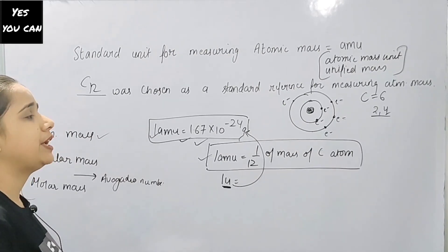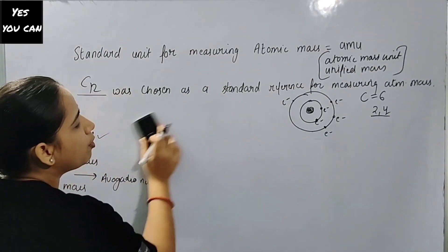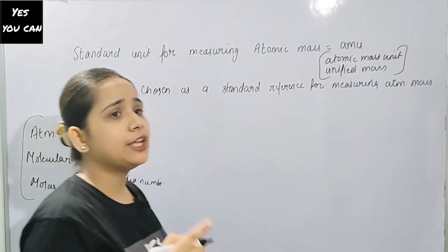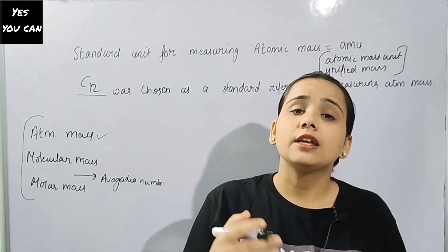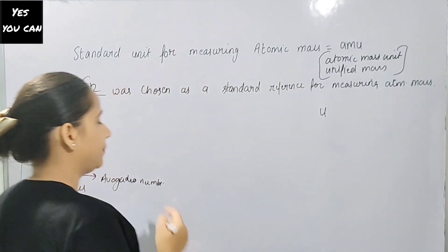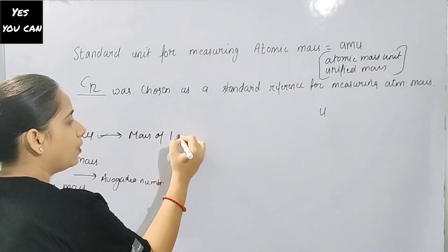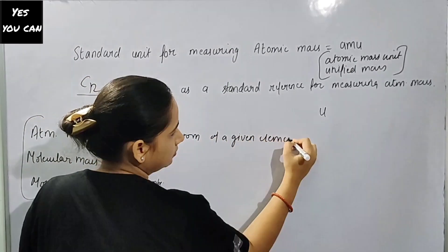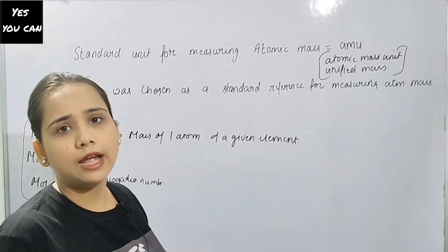So 1 u (unified mass) is equal to 1.67 × 10⁻²⁴ grams. In our periodic table, you don't need to memorize much — just the atomic masses up to 12. This value of u is relative — we derived it by relating it to carbon, which is why we also call it relative atomic mass. The definition of atomic mass is: it is the mass of one atom of a given element.